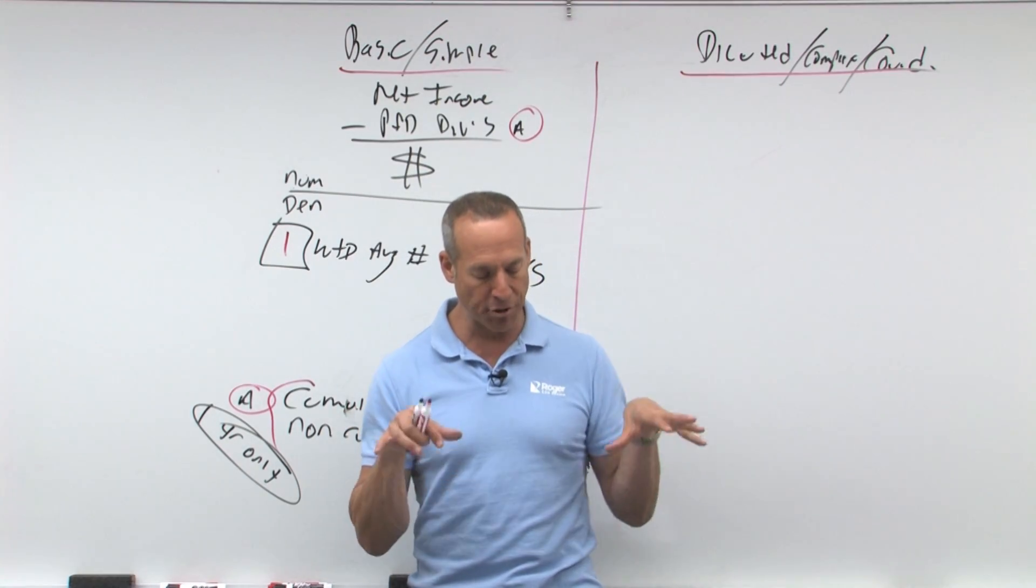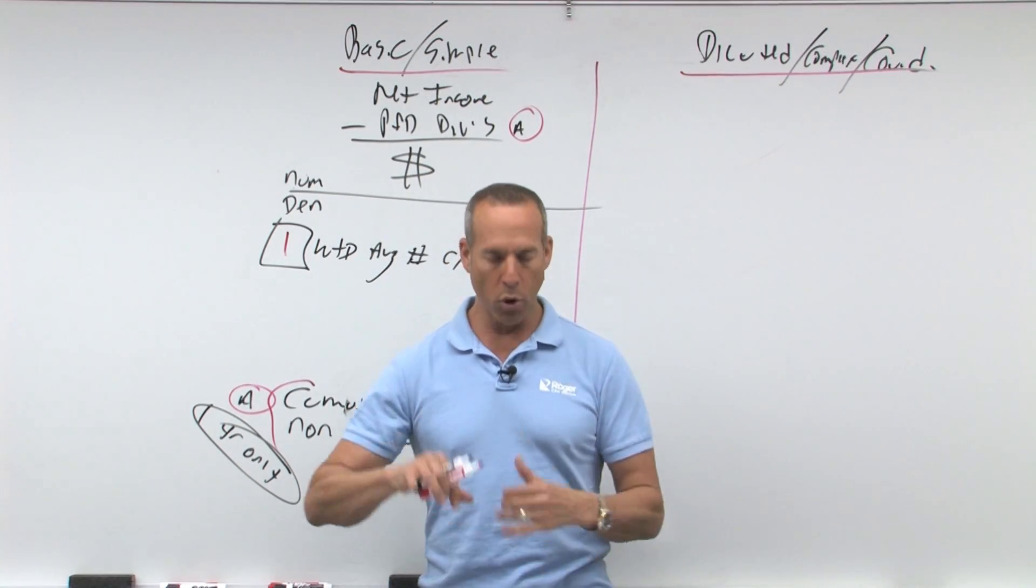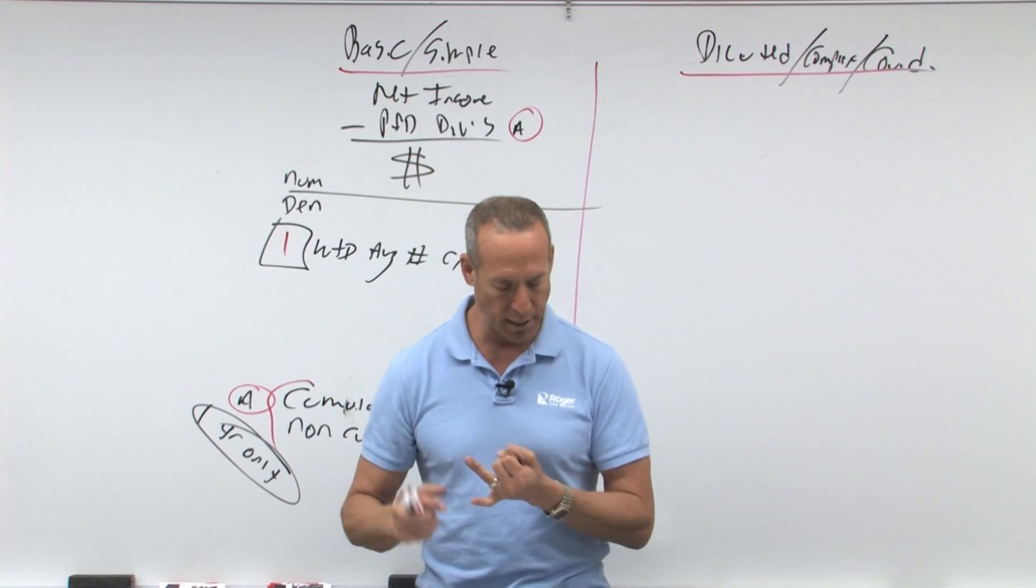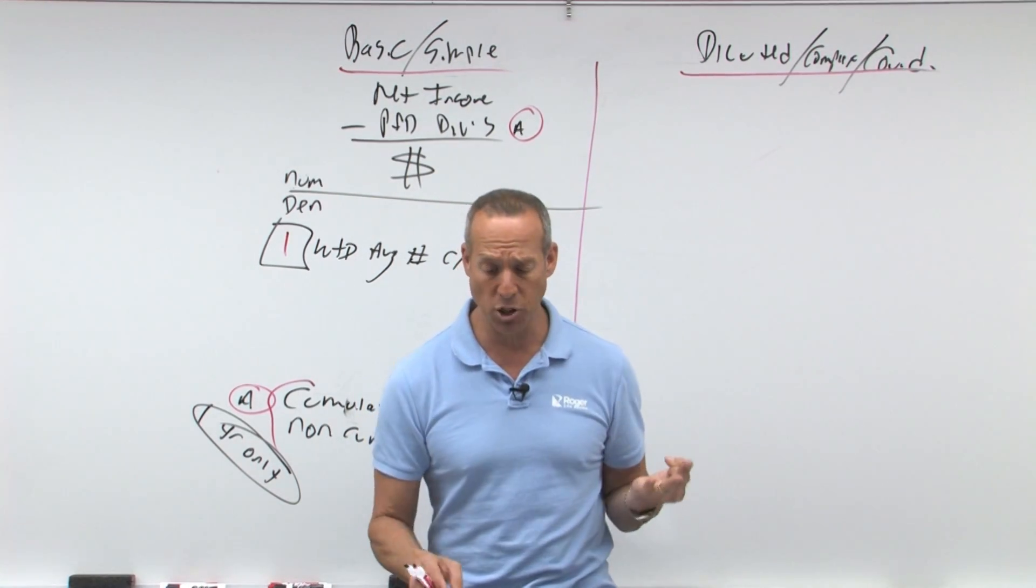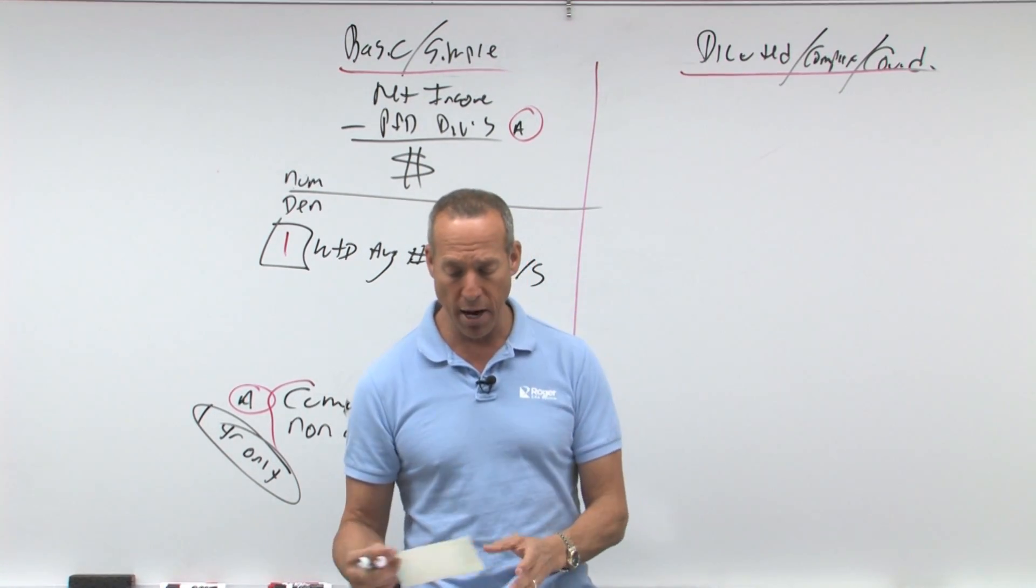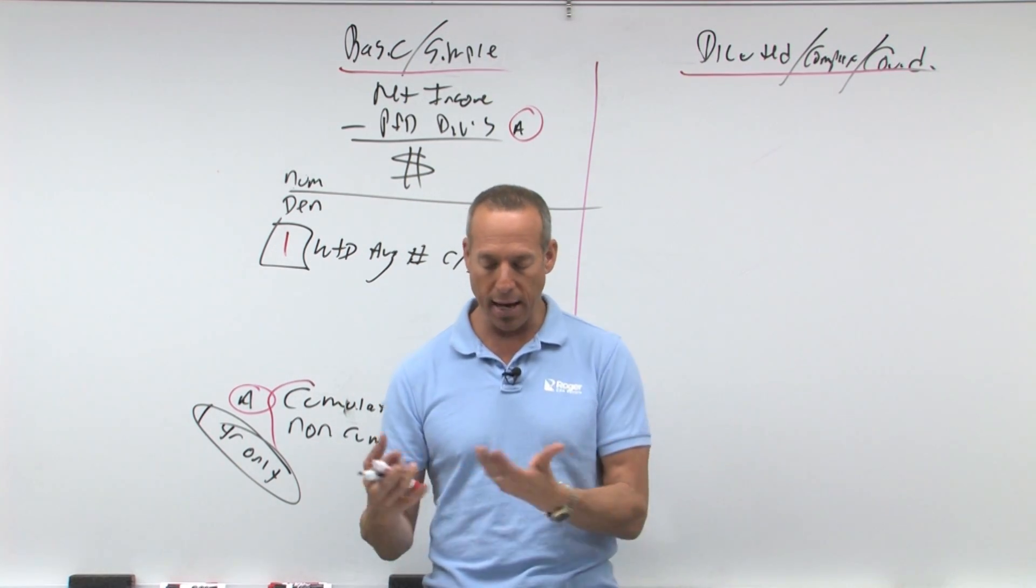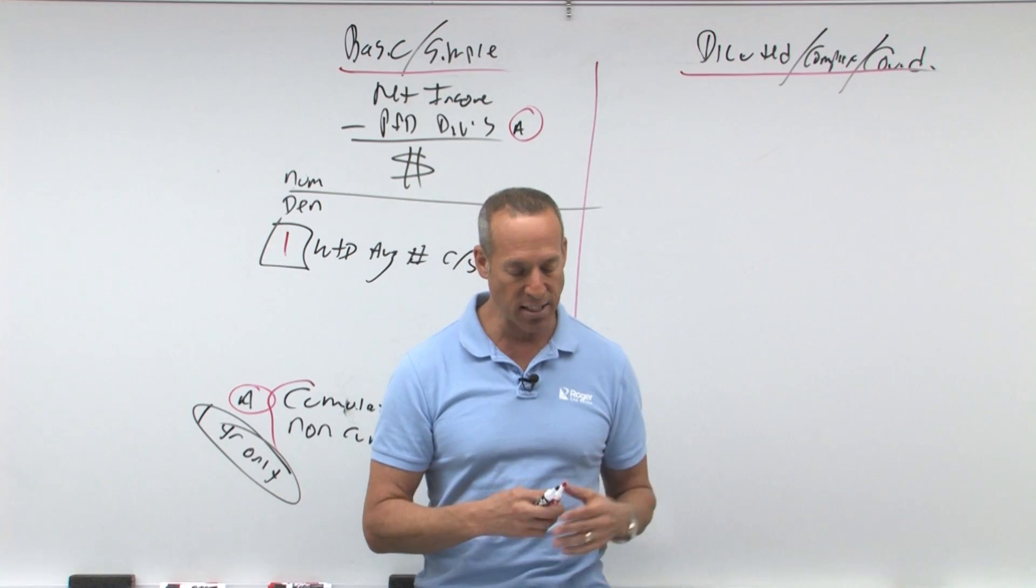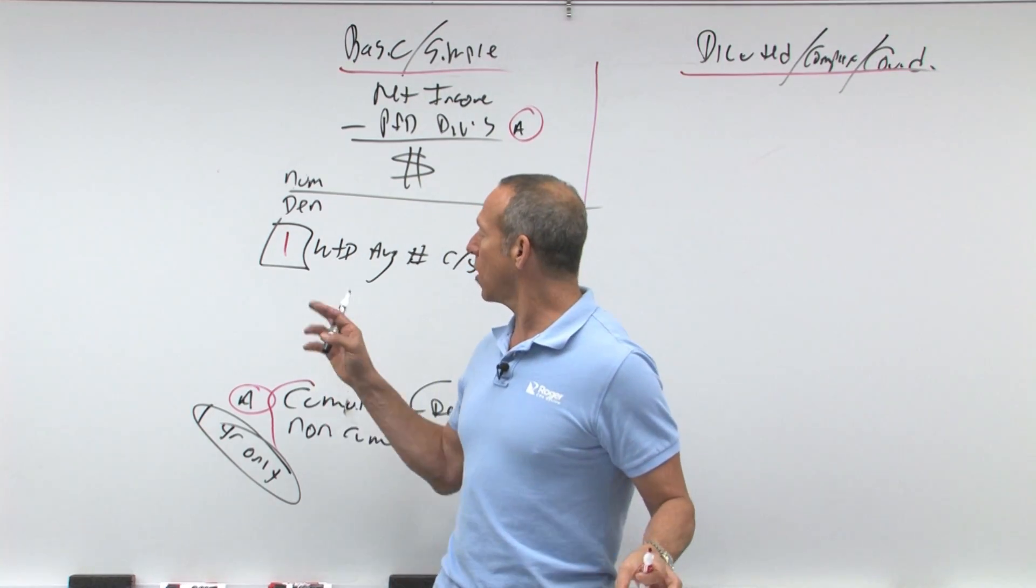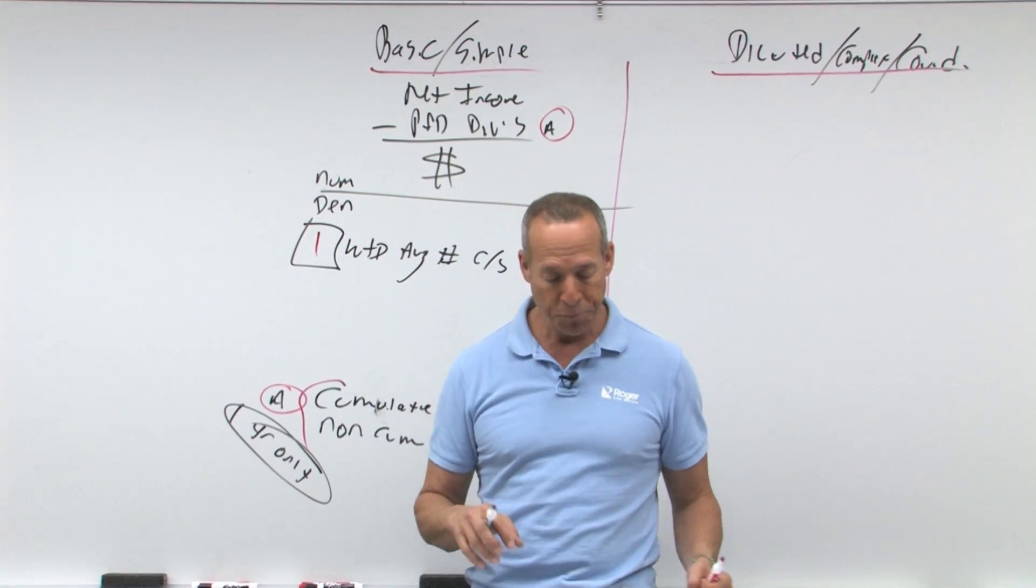So when we talk about the weighted average number of shares outstanding, we're going to treat stock dividends, stock splits, stock subscriptions, and delayed issuance of stocks - all of those are going to be treated as if they've been outstanding for the whole year. In a sense, retroactively or retrospectively as of the beginning of the year.